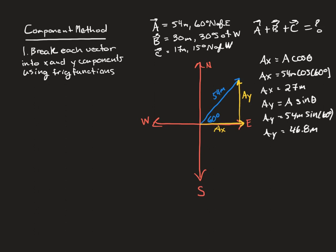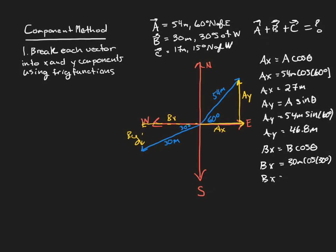Now I need to do vector B. Vector B is 30 degrees south of west, so I look at the west direction and go south of it — that puts us in the third quadrant. The magnitude is 30 meters, and I draw in B of x and B of y components. The x component is adjacent, so I use cosine: 30 meters times the cosine of 30 degrees gives 26 meters.